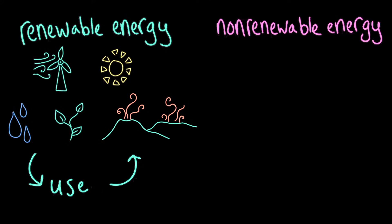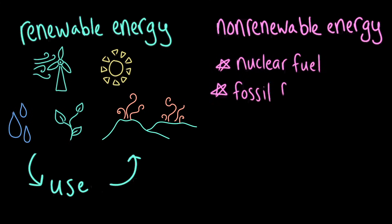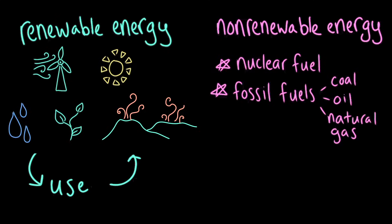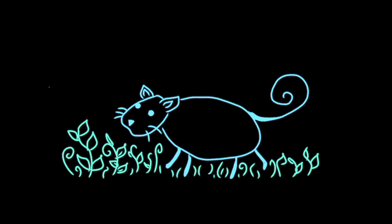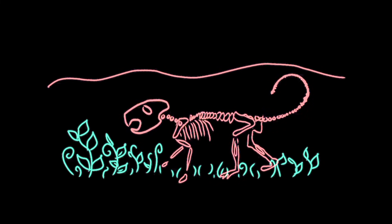Non-renewable energy sources, on the other hand, are sources that exist in a fixed amount and cannot be easily replaced. These energy sources must be extracted from the earth, and they include things like nuclear fuel and fossil fuels, which are things like coal, oil, and natural gas. Fossil fuels were formed in the geologic past from the remains of ancient organisms. Plants and animals that died millions of years ago became buried in the soil, partially decomposed, and were exposed to a lot of heat and pressure. Because they take so long to form, we have a finite amount of non-renewable resources in the earth right now.